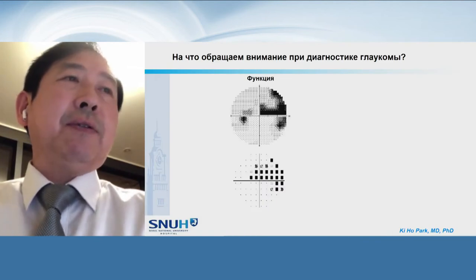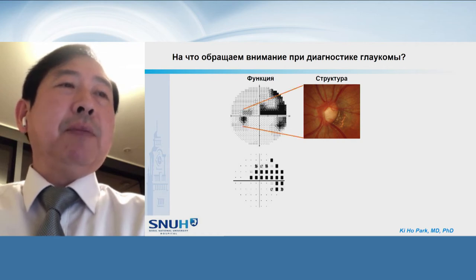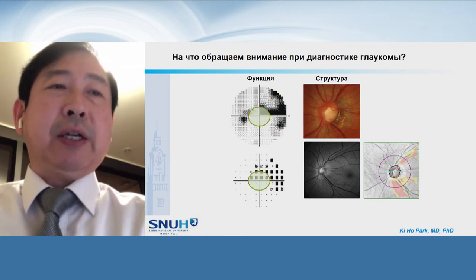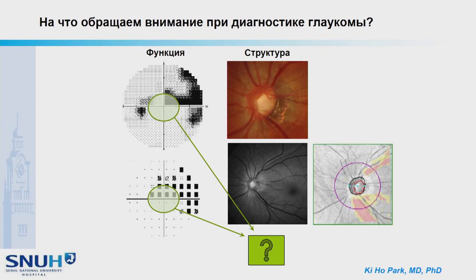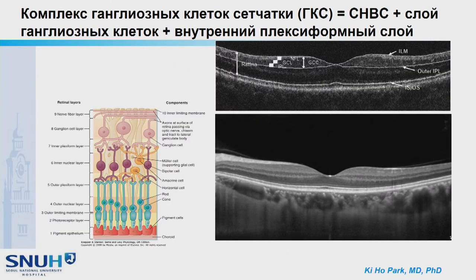Conventionally, we look at the visual field, the optic nerve head, and the peripapillary retinal nerve fiber layers. But why not look at the macular area, where more than 50% of retinal ganglion cells are concentrated? The ganglion cell complex is composed of the nerve fiber layer, ganglion cell layer, and inner plexiform layer. In cross-sectional OCT, it is in this region.